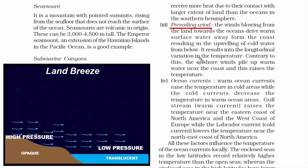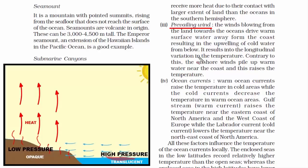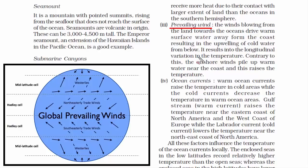This is called land breeze and takes place during nighttime. The winds blowing from the land towards the ocean drive the warm surface water away from the coast, making way for deep cold water to rise from below. This entire process causes longitudinal variation in temperature. During daytime, when cool air from the sea flows towards the land, it piles up warm water near the coast. This kind of temperature variation is caused due to prevailing winds.